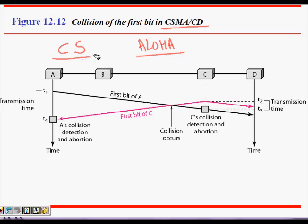The first problem with ALOHA was we were not sensing whether the channel was busy or idle. Carrier Sense brought the idea that before transmitting, a node checks whether someone else is sending something on the wire. The node senses the channel and finds if it is busy or not, and only sends data if it is not busy.